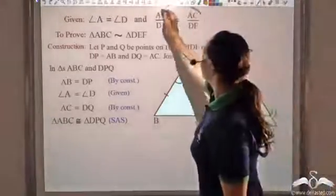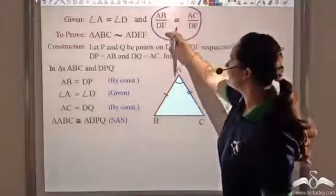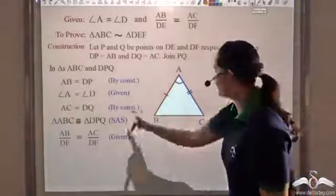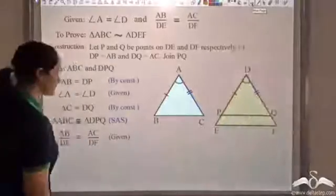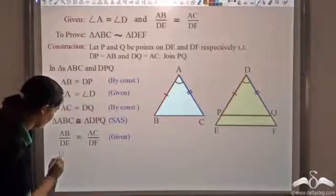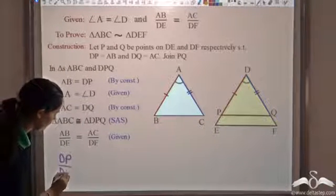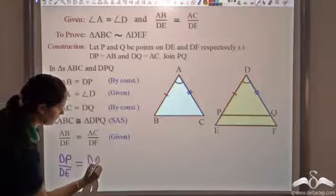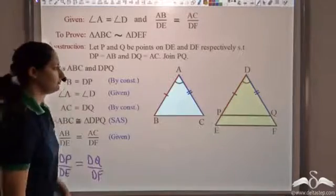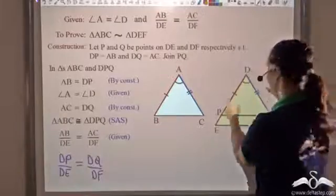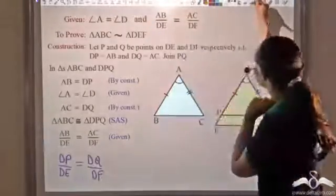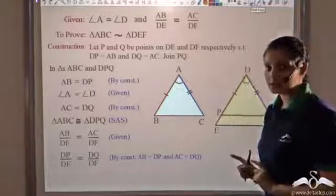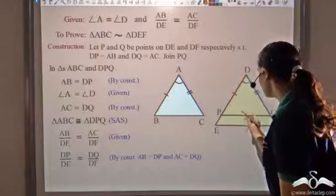Now, what I know is that AB/DE equals AC/DF. Since AB equals DP and AC equals DQ, I can substitute to write DP/DE equals DQ/DF. So I get that the ratio of these sides is proportional, and from this I can say that the lines would be parallel — that is, PQ is parallel to EF.